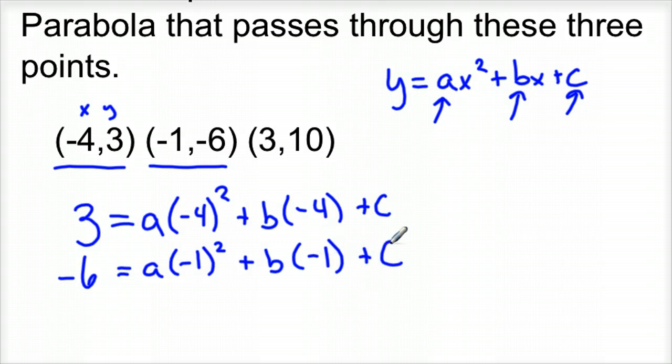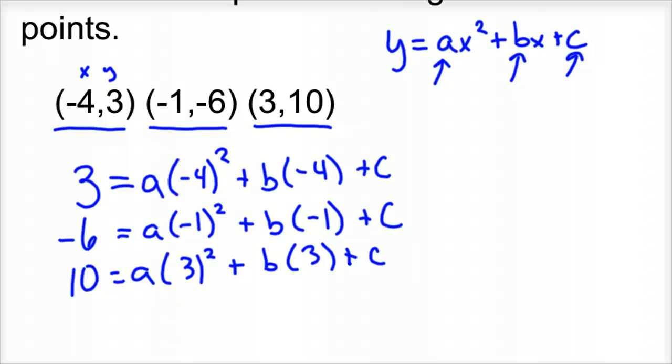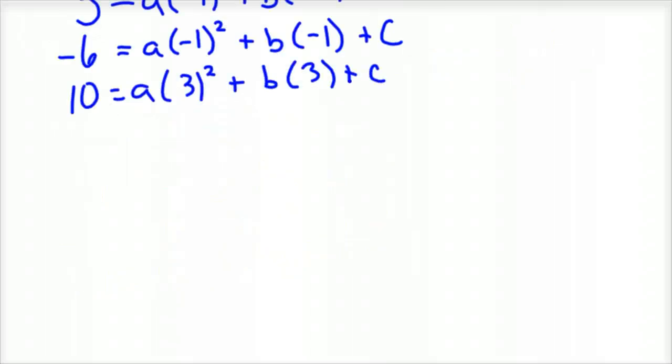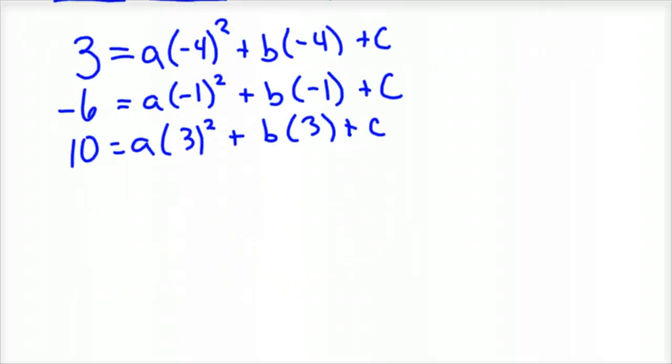And then you do it for the third point, the three ten. And so we'd have for a third equation, ten equals a times three squared plus b times three plus c. So once you have that done, you would simplify those three equations so it's not so messy looking.